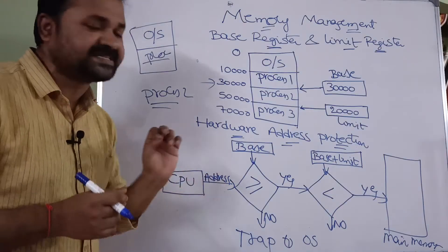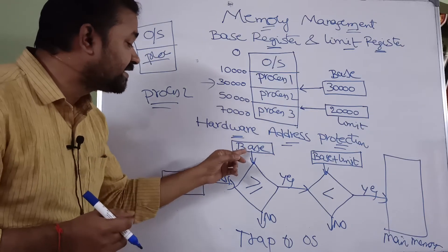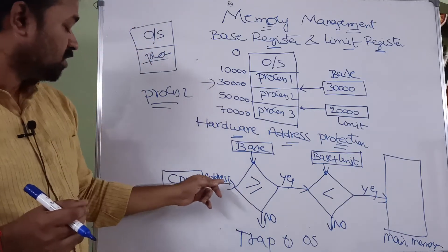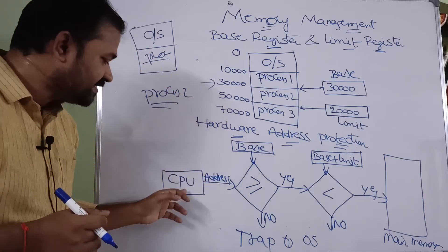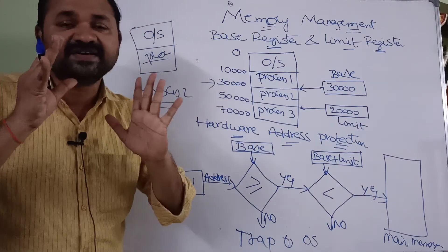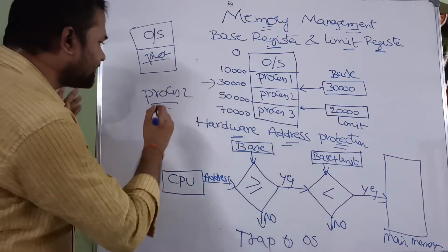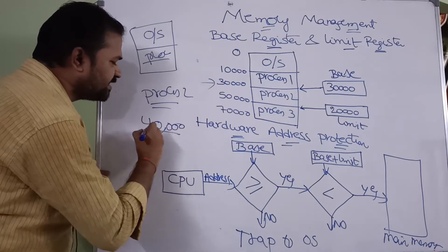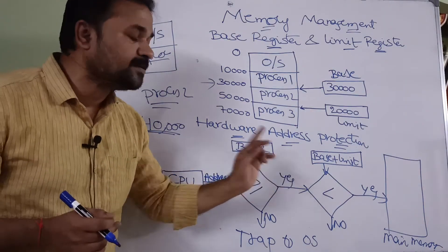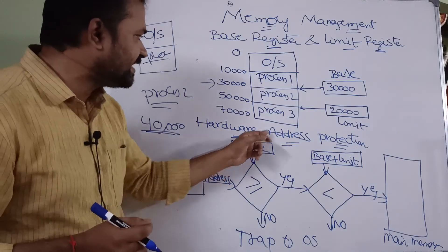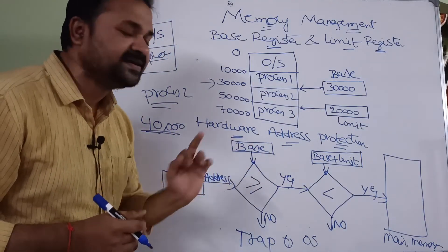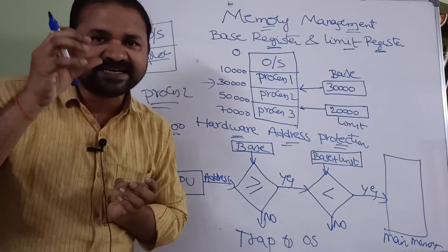If the CPU generates an address, we first compare it with the base address. If the CPU-generated address is greater than or equal to the base address, we can say it is a valid address. For example, if the address is 40,000, this is compared with process 2's base address of 30,000. Since 40,000 is greater than 30,000, the condition is true and it is a valid instruction.